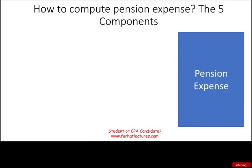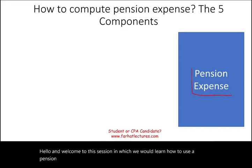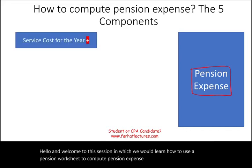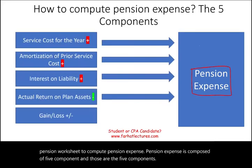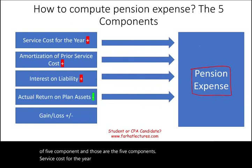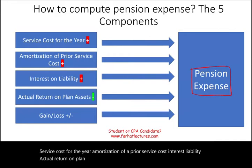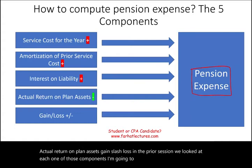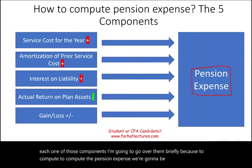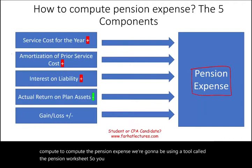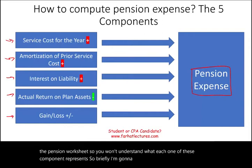Hello and welcome to this session in which we will learn how to use a pension worksheet to compute pension expense. Pension expense is composed of five components: service cost for the year, amortization of prior service cost, interest on liability, actual return on plan assets, and gain/loss. In the prior session we looked at each one of those components and I'm going to go over them briefly, because to compute the pension expense we're going to use a tool called the pension worksheet. You want to understand what each component represents.